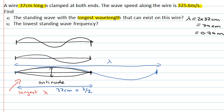Part B asks, what is the lowest standing wave frequency that's possible? To calculate the frequency, we can use the expression V equals F lambda, so the wave speed is the frequency times the wavelength. The lowest standing wave frequency will correspond to the longest wavelength.